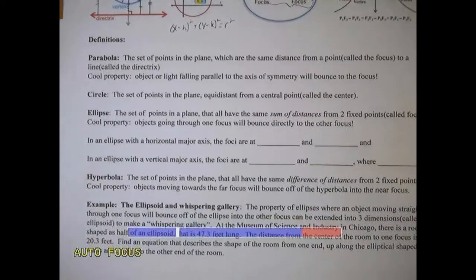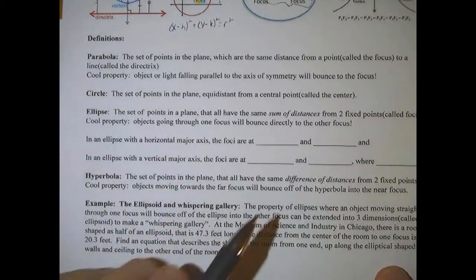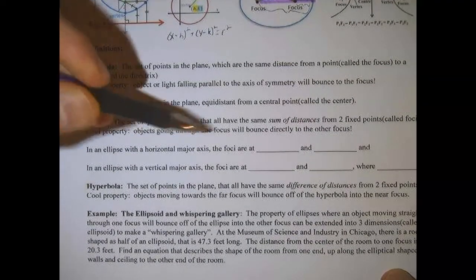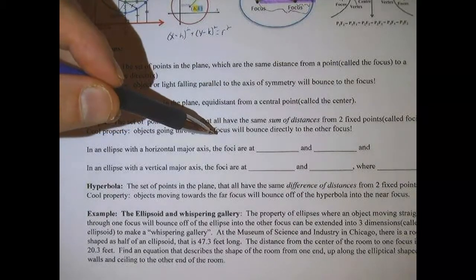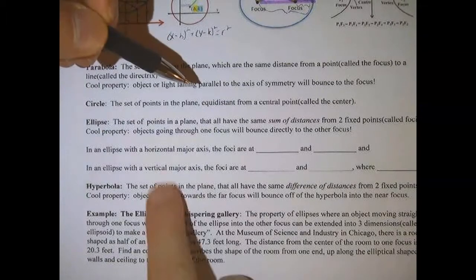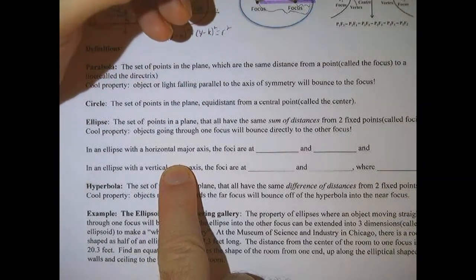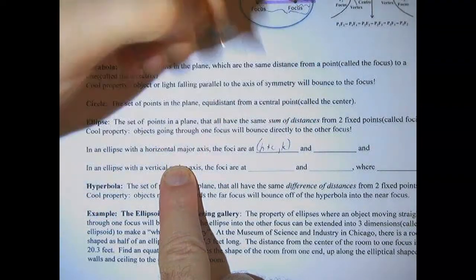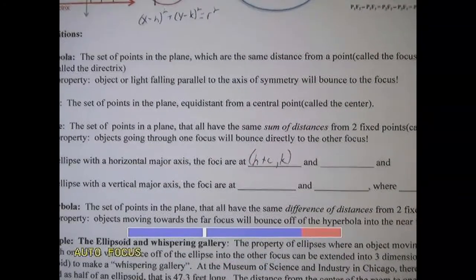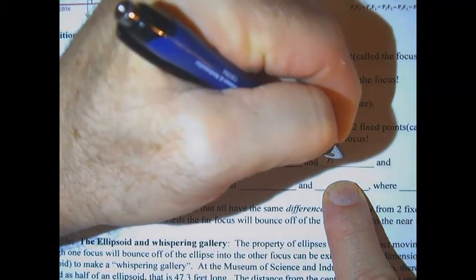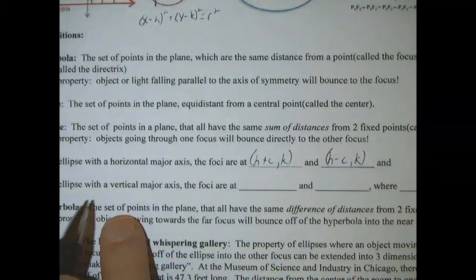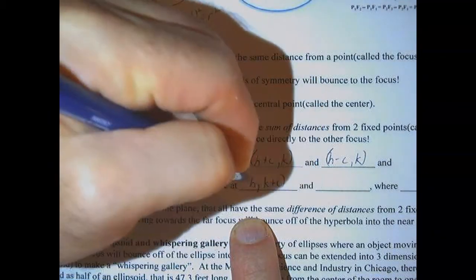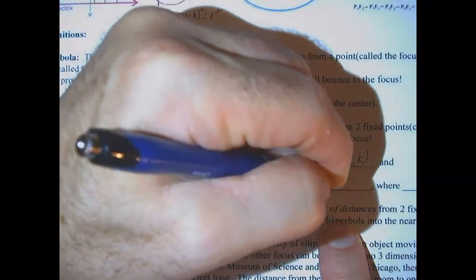So let's focus on ellipses a little bit, and we'll focus on the two foci of an ellipse. And so in the ellipse, with the horizontal major axis, there is a fairly easy way to find the focus. If it's a horizontal major axis, then the focus will be at h plus c comma k, and the other focus would be at h minus c comma k, and if it's a vertical major axis, then the focus would be at h comma k plus c, and h comma k minus c.